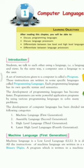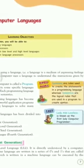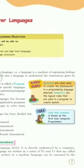Each programming language has its own specific syntax and semantics. Syntax are rules used to create statements in programming languages, whereas semantics are the logical rules that are used in a program.